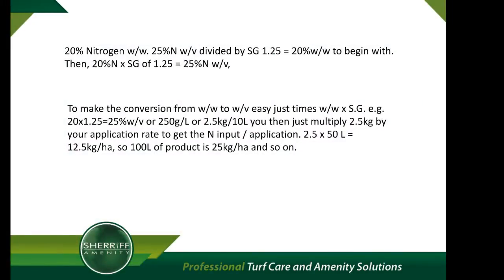To summarize: to make the conversion from weight by weight to weight by volume easy, simply multiply weight by weight times the specific gravity. For example: 20 times 1.25 specific gravity equals 25 percent weight by volume, or 250 grams per litre, or 2.5 kilograms per 10 litres. You then just multiply 2.5 kilograms by your application rate to get the nitrogen input per application. For example: 2.5 times 50 liters application rate equals 12.5 kilograms per hectare. So 100 liters of product would therefore equal 25 kilograms per hectare, and so on.